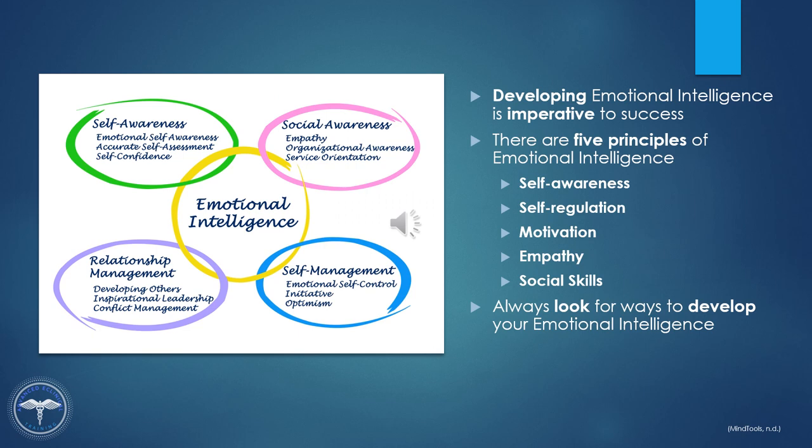Let's summarize what we've discussed in this lesson. Developing high emotional intelligence is incredibly important for a successful career. When you have high levels of emotional intelligence, you are able to build strong working relationships and manage difficult situations more effectively. There are five principles of emotional intelligence: self-awareness, self-regulation, motivation, empathy, and social skills. Even if you already have many of these elements, it's important to look for opportunities to build them further. This will increase your leadership potential and improve the quality of your relationships.